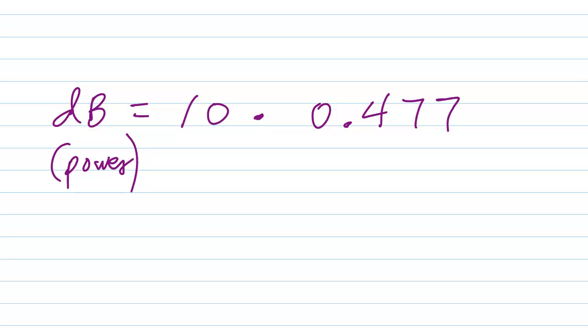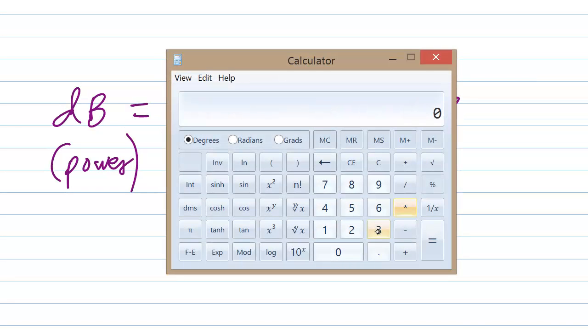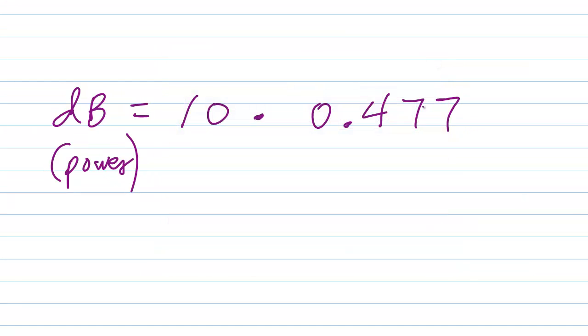Let me check that one more time. It's always a good idea to go through these things twice. 0.477. Then you multiply that by ten and you get 4.77.